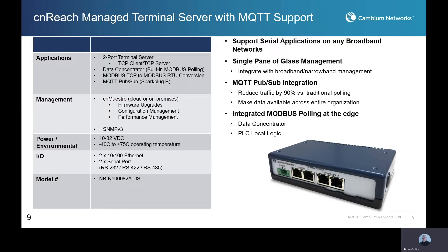A subset of that is our managed terminal server, also managed with CN Maestro. This device allows you to add serial connectivity to any broadband connection — using one of those Ethernet ports to connect into your broadband point, whether it's a switch or directly to the radio, and then provides two serial ports where you can do things like Modbus polling at the edge, MQTT publish/subscribe integration, or simply add console access or serial port access to a broadband network. For example, customers can add this terminal server to achieve serial connectivity into the CLI or out-of-band management port on a microwave link or a remote switch.